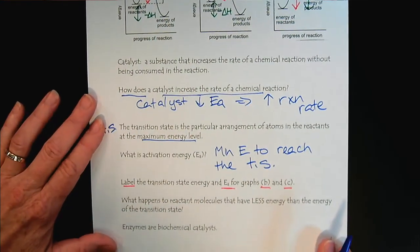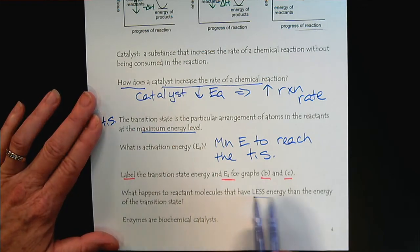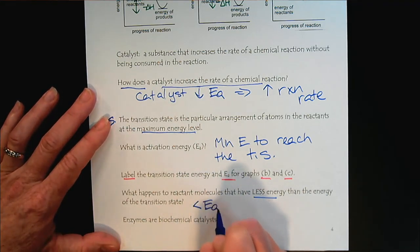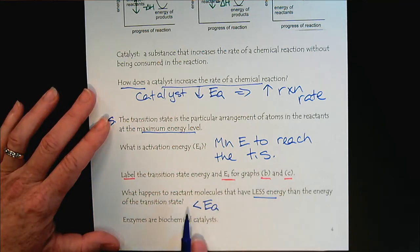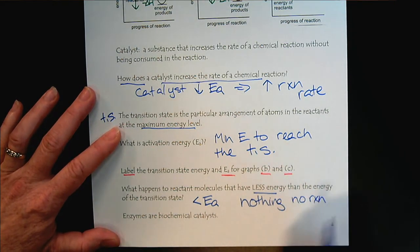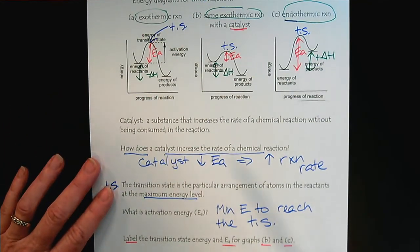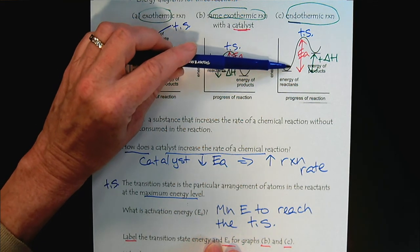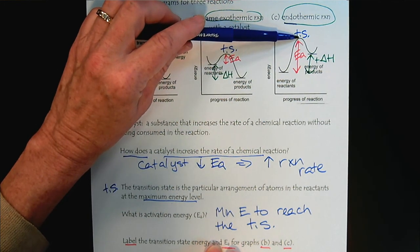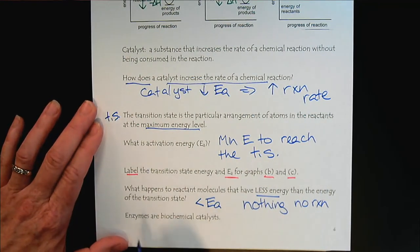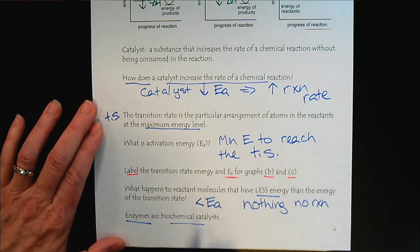What happens to reactant molecules that have less than the energy of the transition state — less than the activation energy? If reactants are colliding and their energy is below the activation energy, nothing happens — there's no reaction. The reactants have to have enough energy to get all the way to the top of the transition state for the reaction to occur. As we venture into biochemistry, we will learn that in our body we use enzymes as our biochemical catalysts.